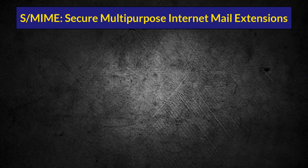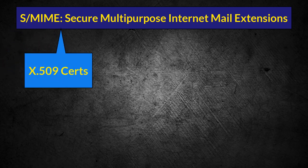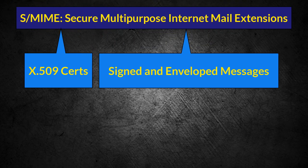Controls that help manage email risk include S/MIME, or Secure Multipurpose Internet Mail Extensions — a standard protocol that uses public-private keys and X.509 certificates for digitally signing and encrypting messages. S/MIME can support authentication, confidentiality, integrity, and non-repudiation to create two types of messages: signed messages and enveloped messages. Signed messages verify the sender, establish non-repudiation, and ensure message integrity. Digital signing is the most common use of S/MIME.